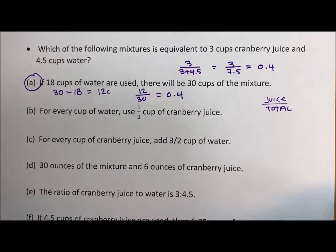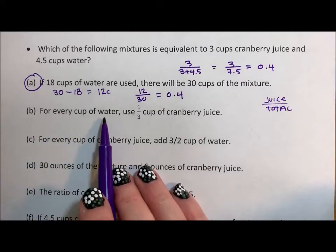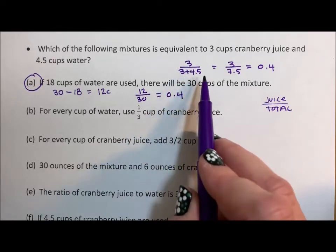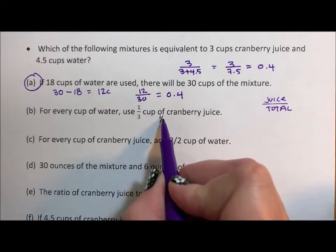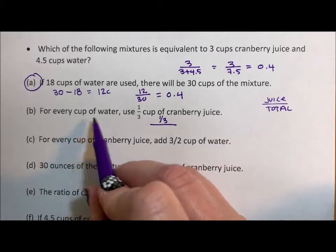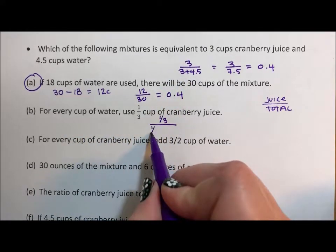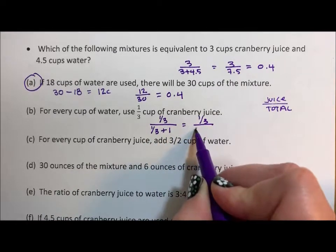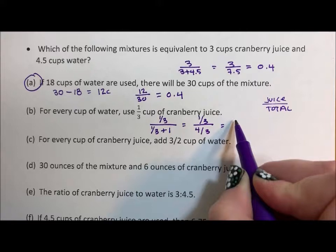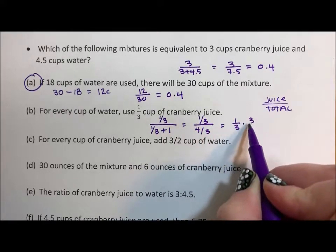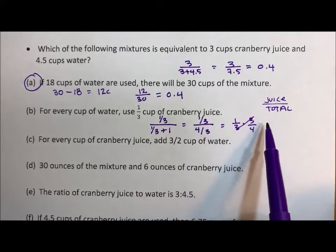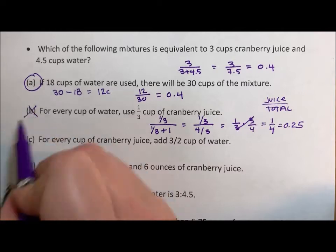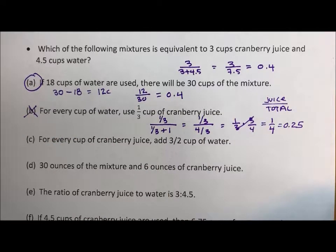Now it's not just one, it says which of them so it's going to be more than one. Okay, for every cup of water use one-third cup of cranberry juice. So juice to total, the cranberry juice is one-third cup, the water and cranberry juice is one-third plus one, that's one-third plus four-thirds. So that's flip and multiply, one-third times three-fourths, the threes cancel so that's really one over four, that's 0.25. That does not look like the same. So B does not work.